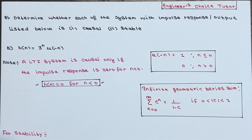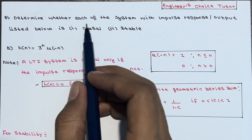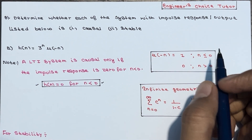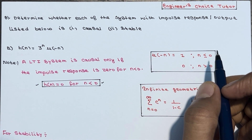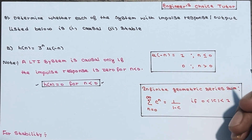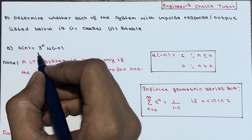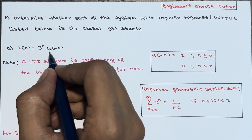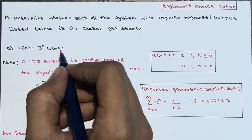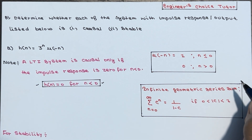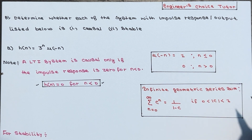In this lecture, we will determine whether each system with impulse response or output listed below is causal or not, and stable or not. Let's start with the first question where impulse response h(n) is given as 3 to the power n into u of minus n. Let's go through a few topics we have already covered so you will understand these concepts better.